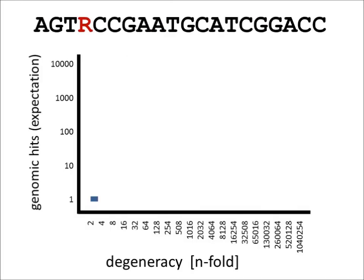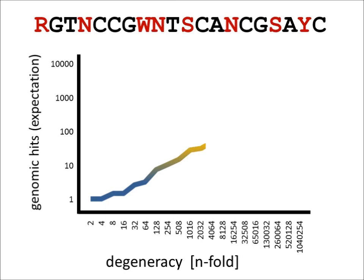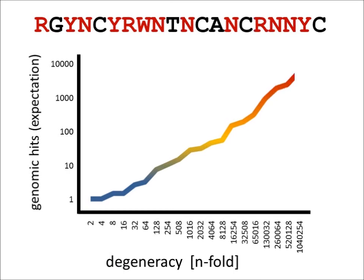The second problem is that a growing degree of degeneracy will boost the probability for mispriming. Especially in consideration of the ubiquity of multi-copy transposons, one must preclude that primers match to these highly repetitive elements.